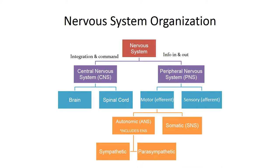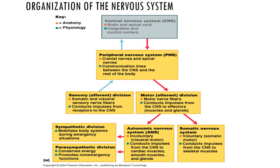Within the autonomic nervous system we also have the sympathetic nervous system, which mobilizes the body during emergency situations like fight or flight, and the parasympathetic nervous system, which conserves energy and promotes non-emergency functions like resting and digesting. Here is an additional slide showing the organization of the nervous system with some additional detail.